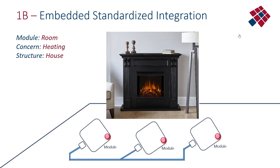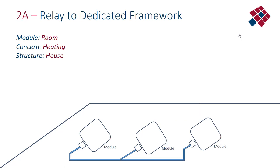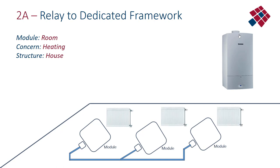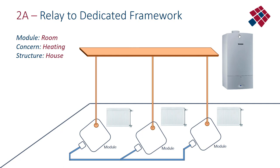If we look at fireplaces or burners, you could centralize the heating for the whole house in a central place and distribute it — which is called central heating. You would have radiators and conduits distributing the heated fluid or water throughout the rooms of the house. Therefore, it is a dedicated framework to relay the centralized production of the concern.